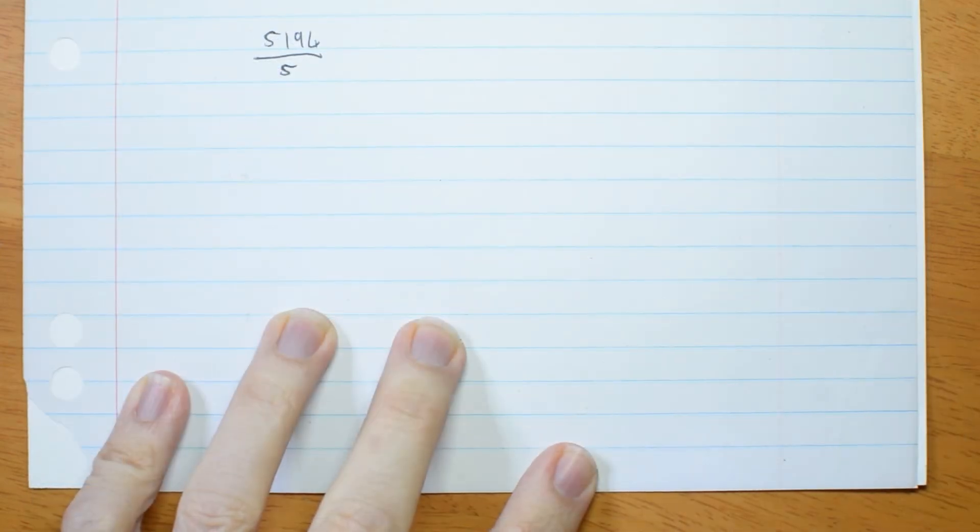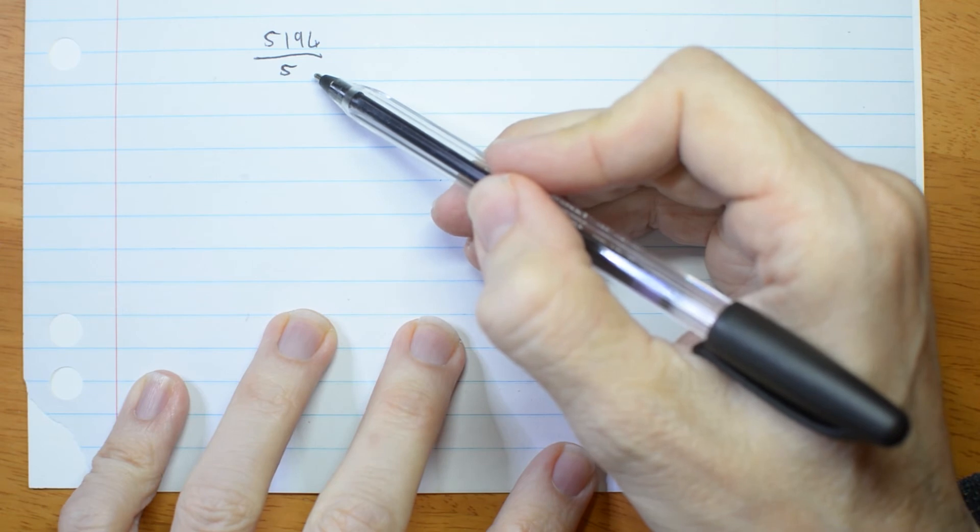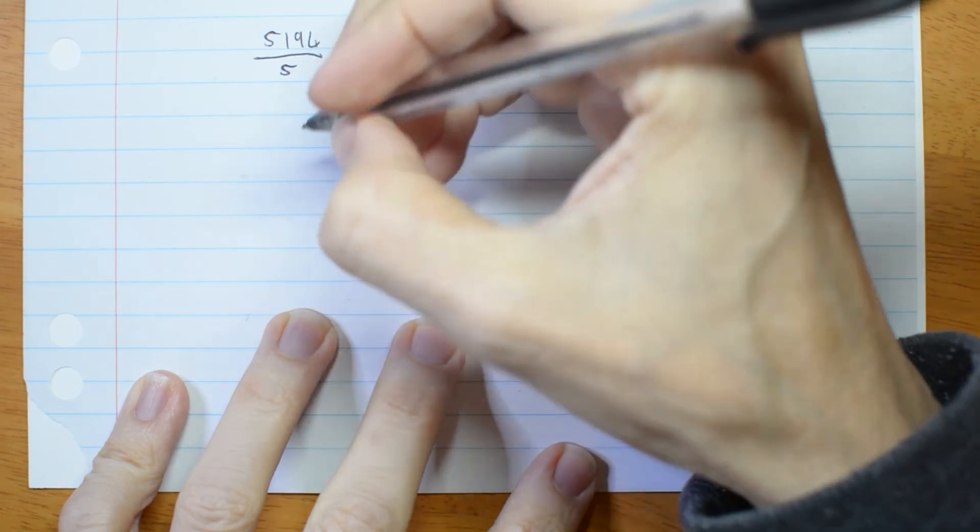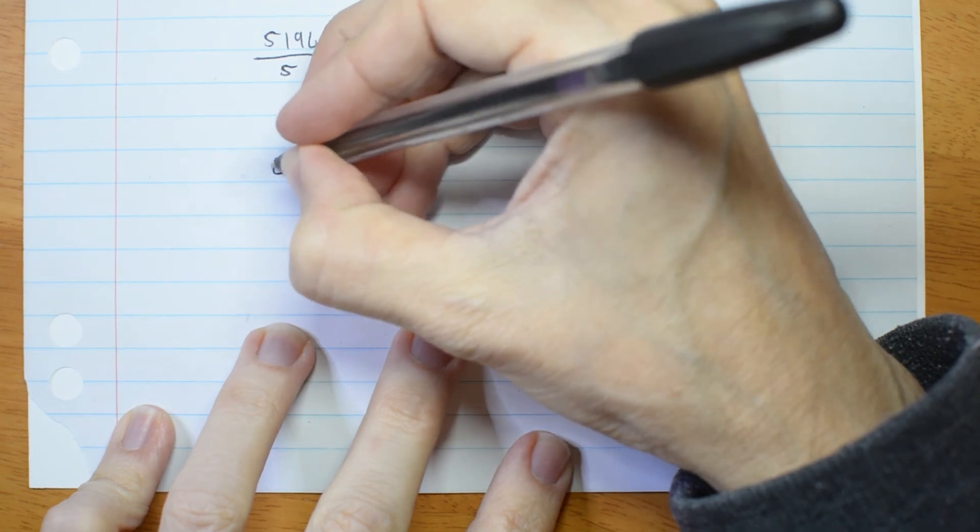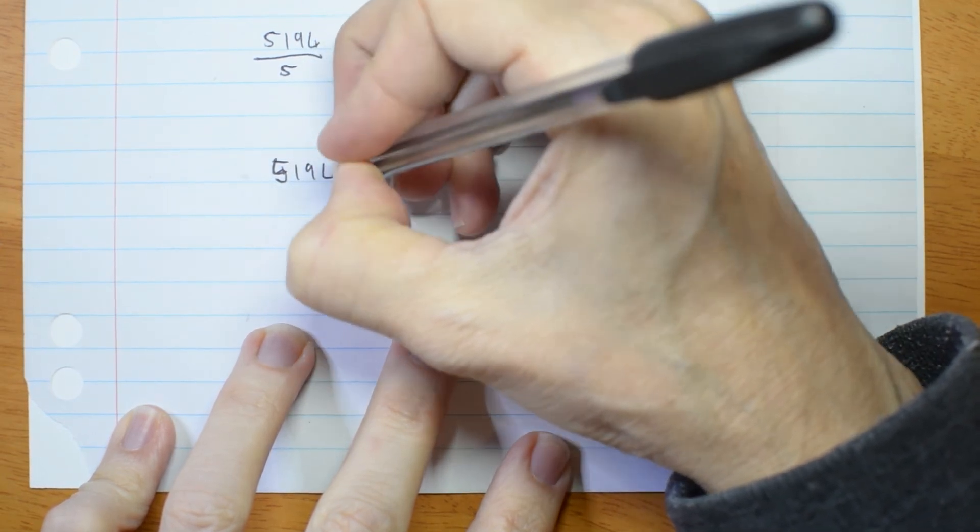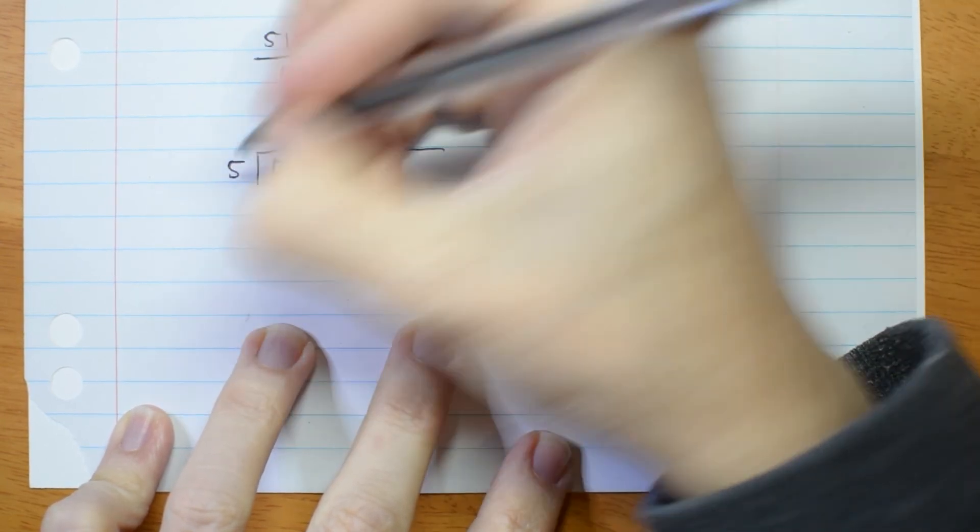Let me show you another example. 5,194 divided by 5. So I'm going to write my dividend. 5,194 under the bracket. I'm going to write my divisor over here.